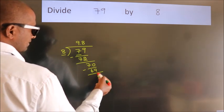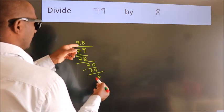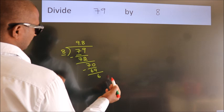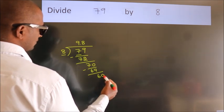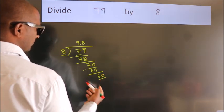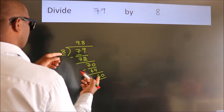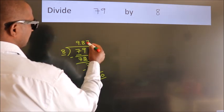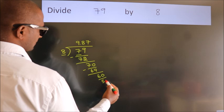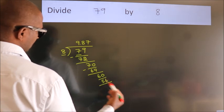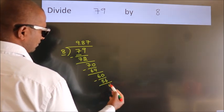After this, we already have the decimal, so directly take 0. So 60. A number close to 60 in the 8 table is 8 sevens, 56. Now we subtract and get 4.